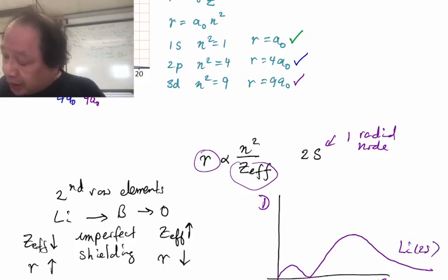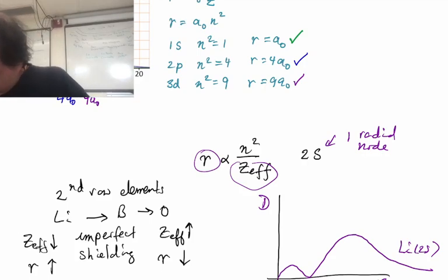Boron will be a slightly smaller r, because it's in between. But it will still have one radial node. So here I'll make it slightly smaller. Here will be the boron 2s.